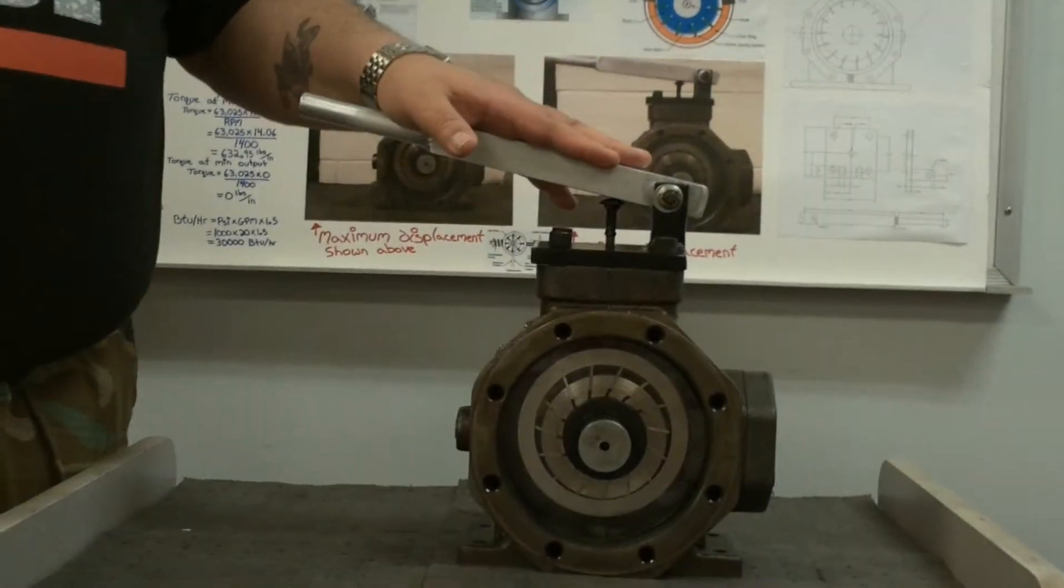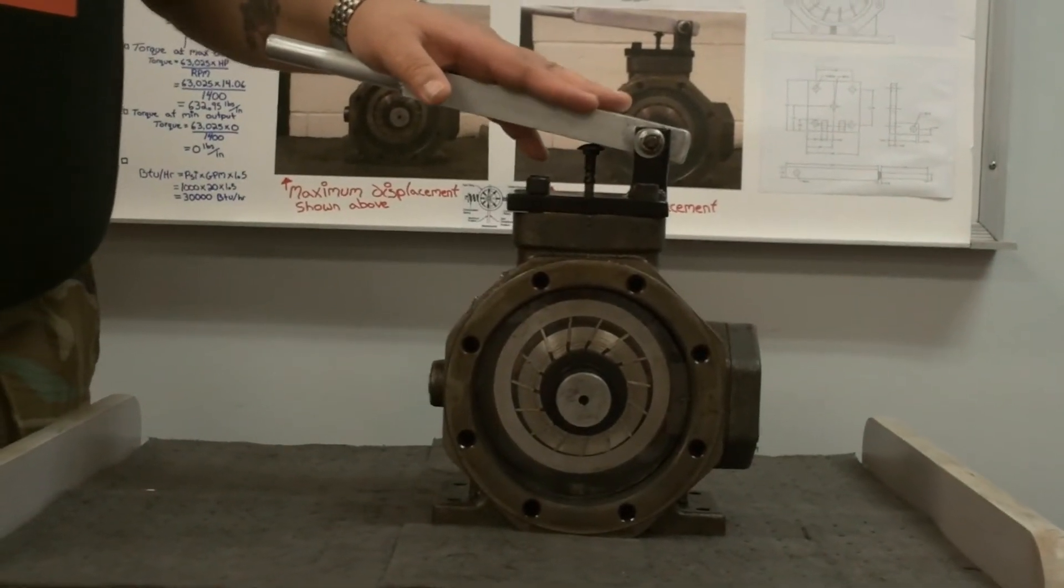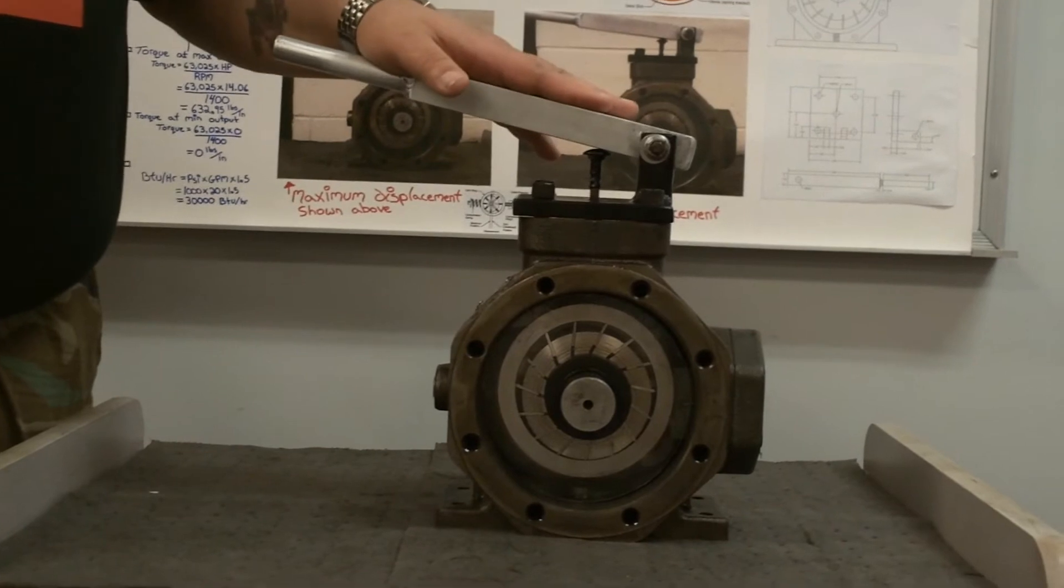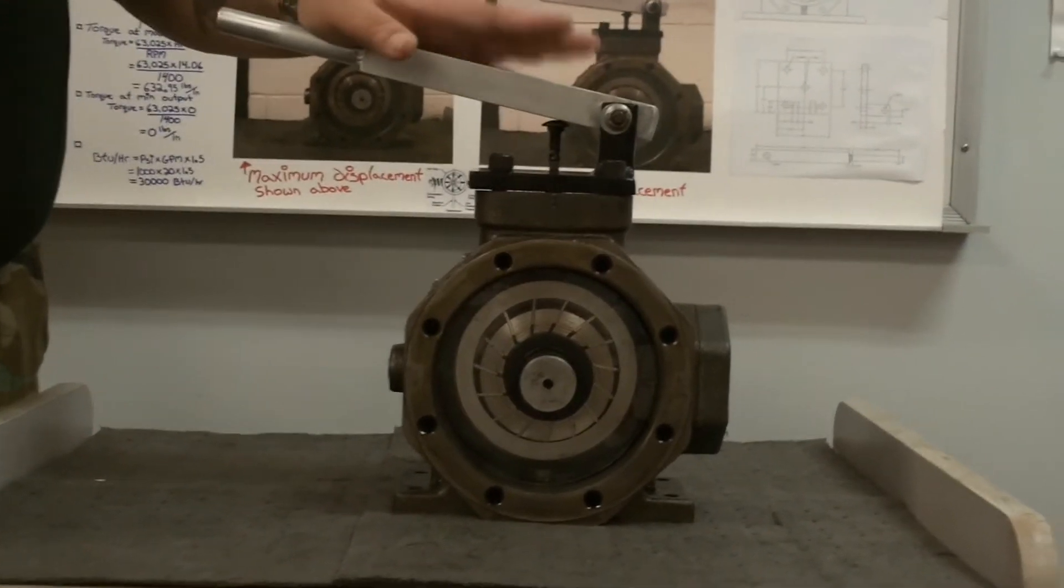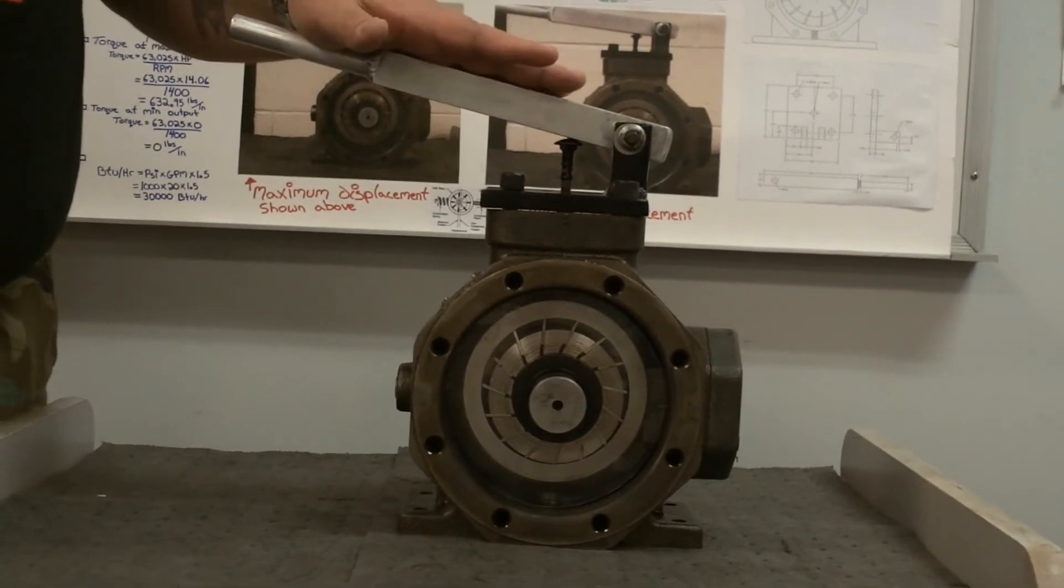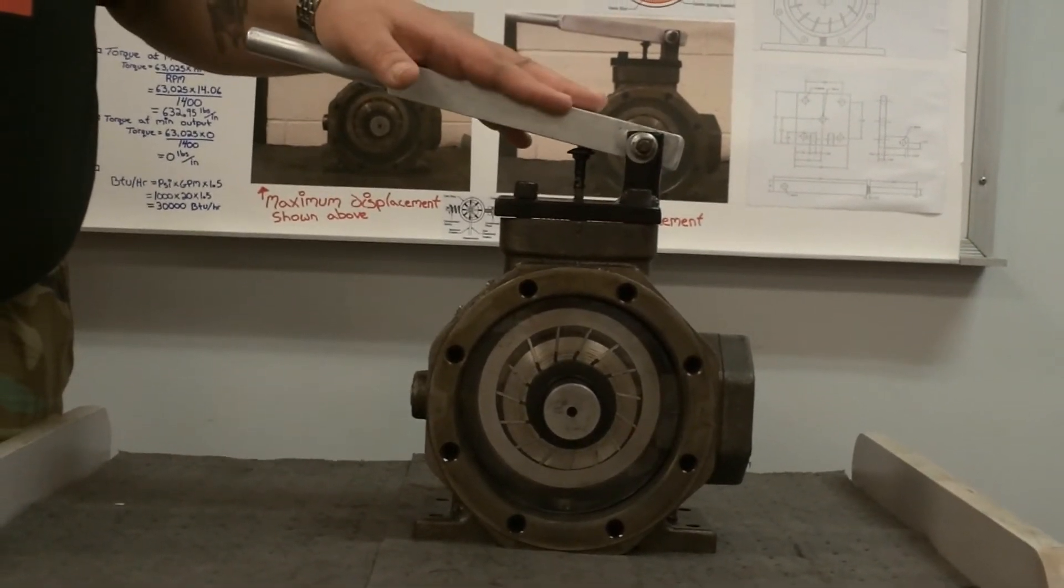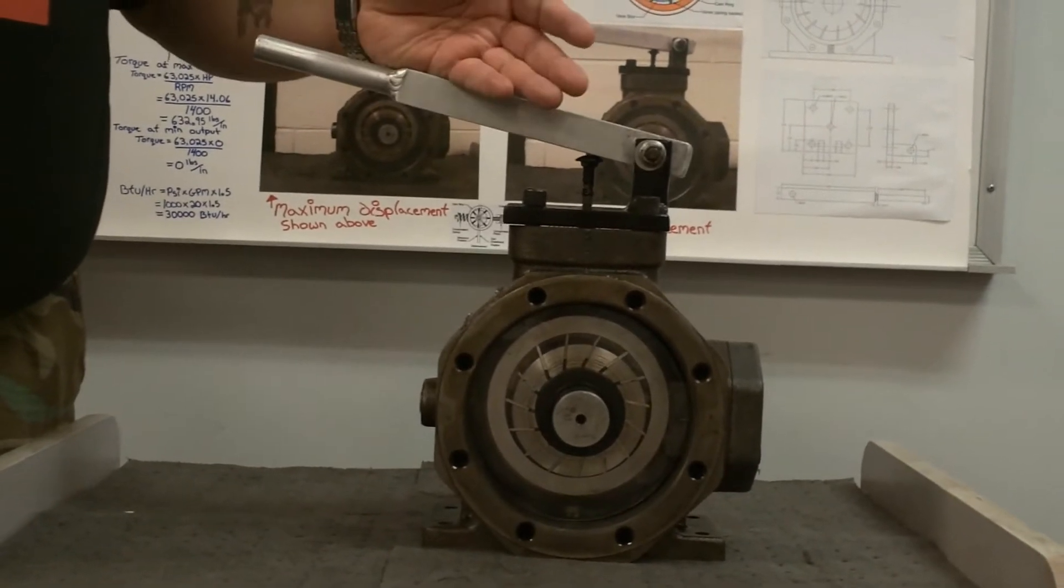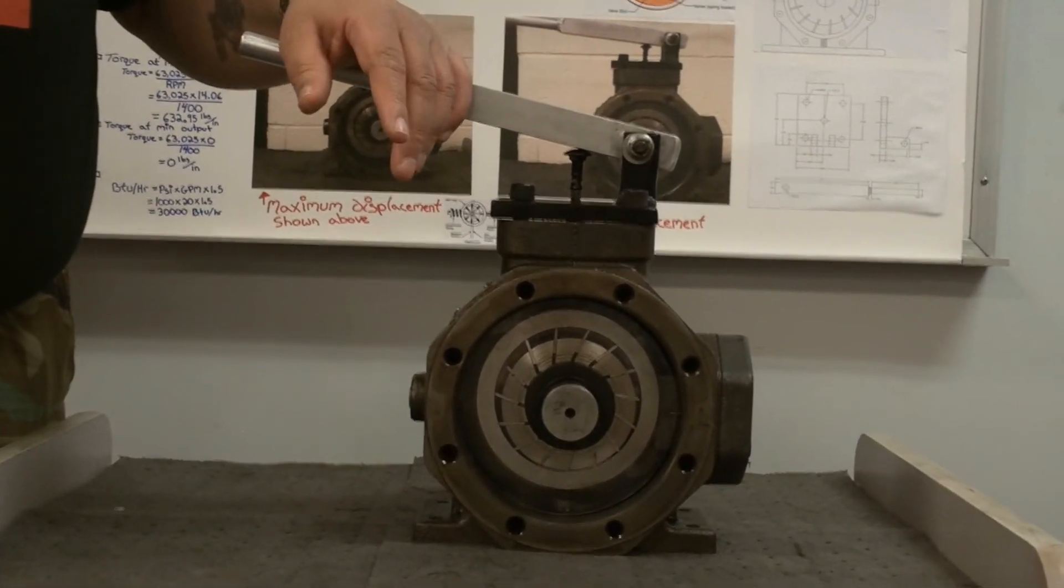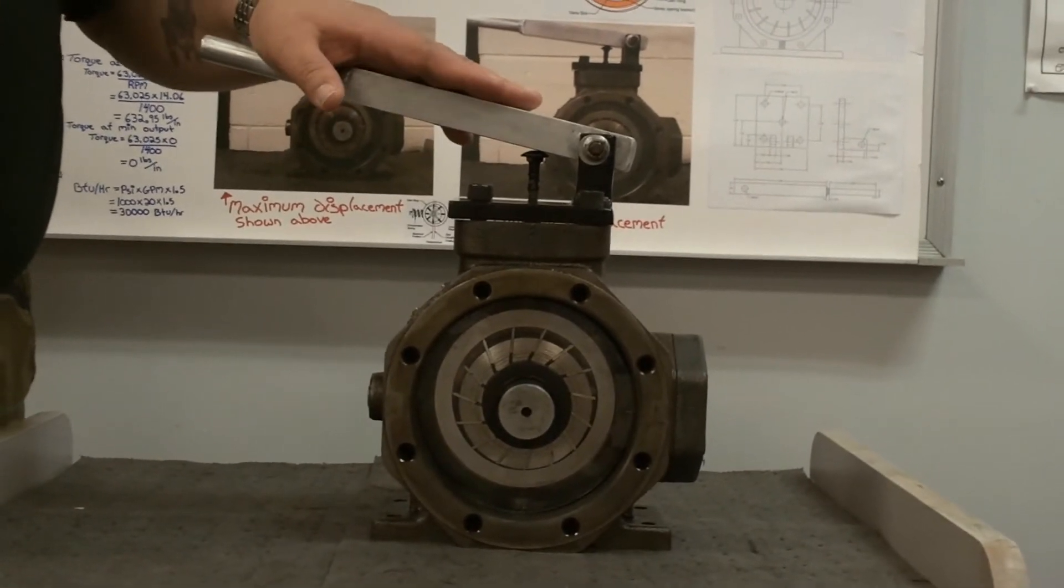All right, this is a variable displacement hydraulic pump used in a variety of applications. It's much more efficient than a fixed displacement pump. A fixed displacement pump requires a large motor to handle its maximum flow rate at all times. Any excess oil isn't generating work, it just goes back to the tank. It can cause some problems with heat and it's definitely not as efficient.